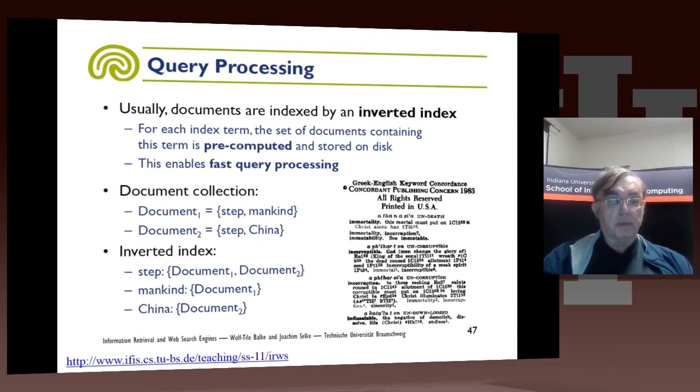So this tells you what the inverted index for these examples here. We have three words: Step, Mankind, and China. And now Step is mapped to two documents, Mankind and China, and each map to one document.